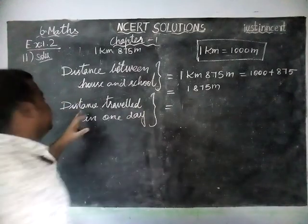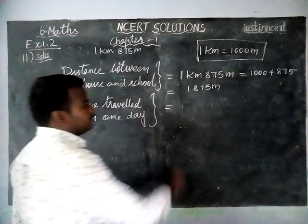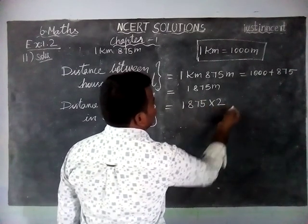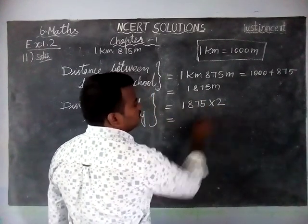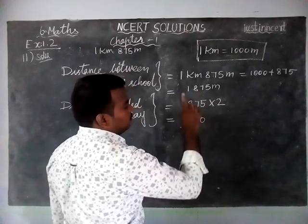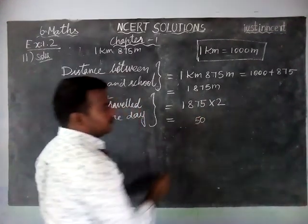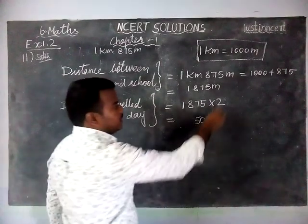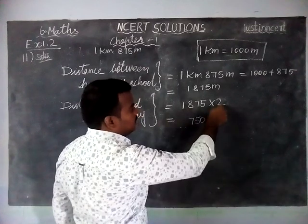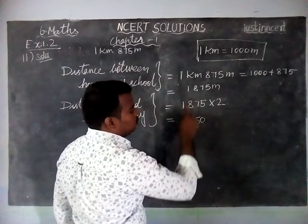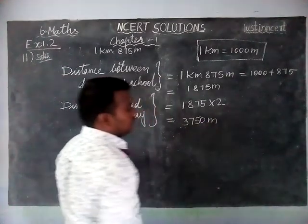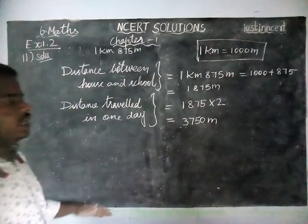So 2 times we are going to multiply the distance traveled in 1 day. 1875 into 2 is equal to — 2 fives are 10, remaining 1; 7 twos are 14, 14 plus 1 is 15, remaining 1; 8 twos are 16, 16 plus 1 is 17, remaining 1; 2 ones are 2, 2 plus 1 is 3. So 3750 m. The student is walking 3750 m daily.